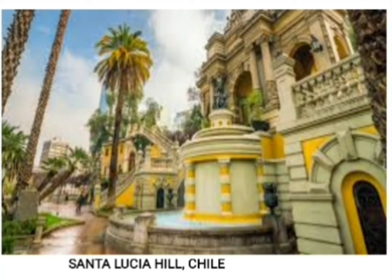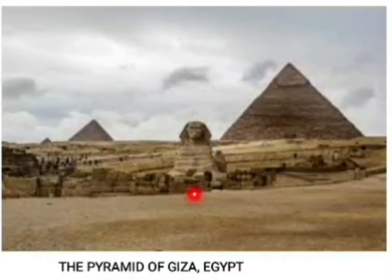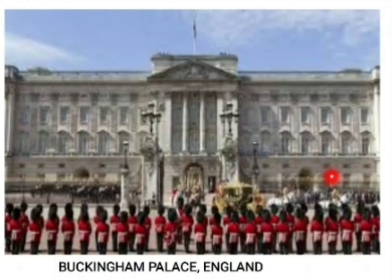You can see the Santa Lucia Hill in Chile. On this hill you can see many hotels, shopping centers, roads, stairways, and fountains. It is also a wonderful place. Here you can see the Colosseum, located in Italy. Here you can see the Pyramid of Giza in Egypt.